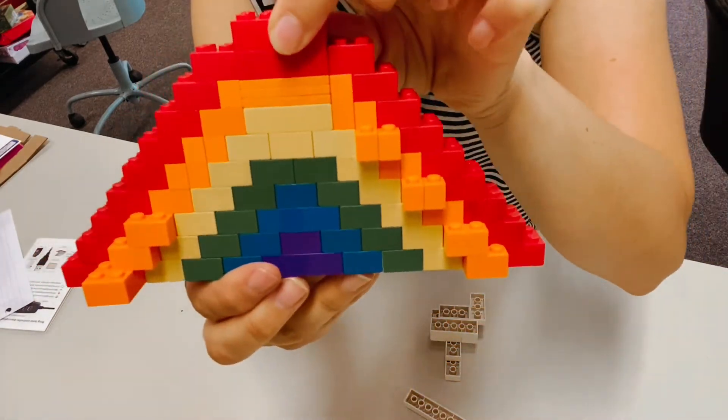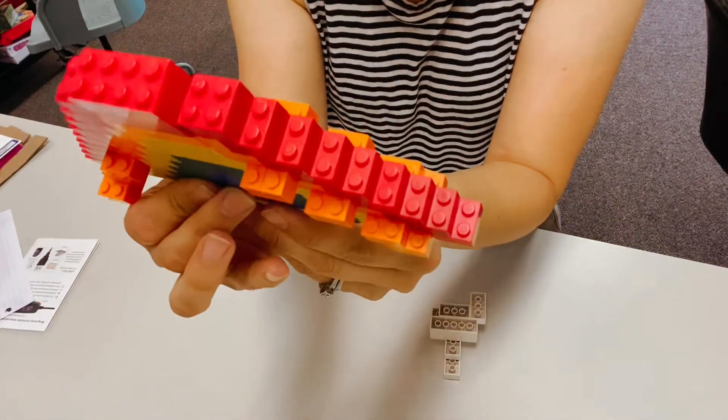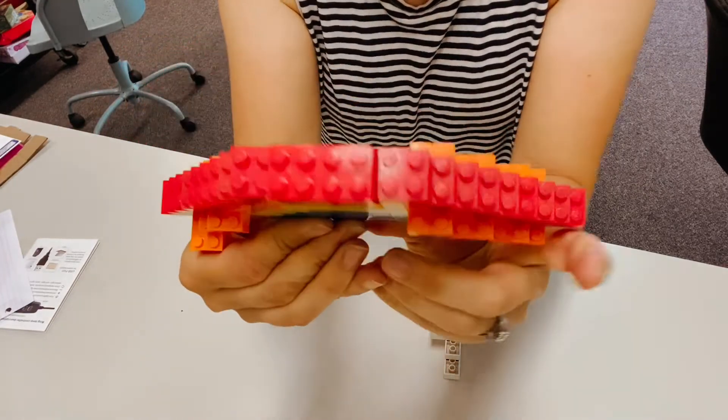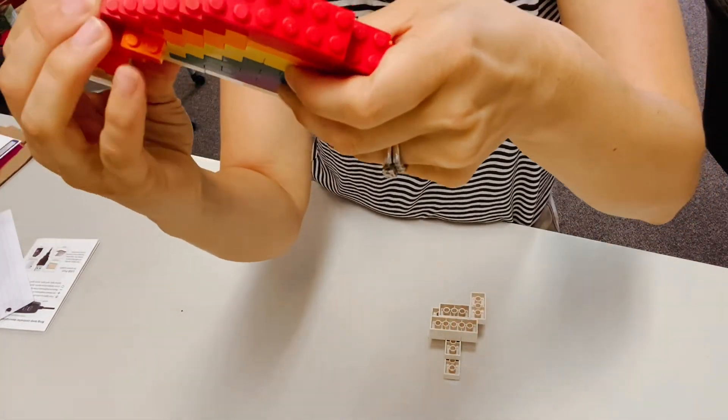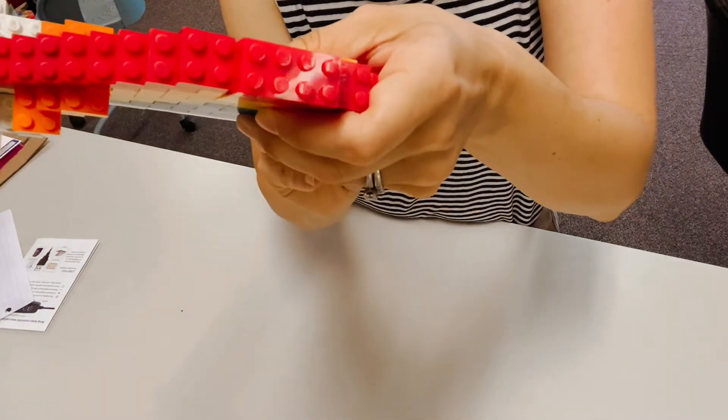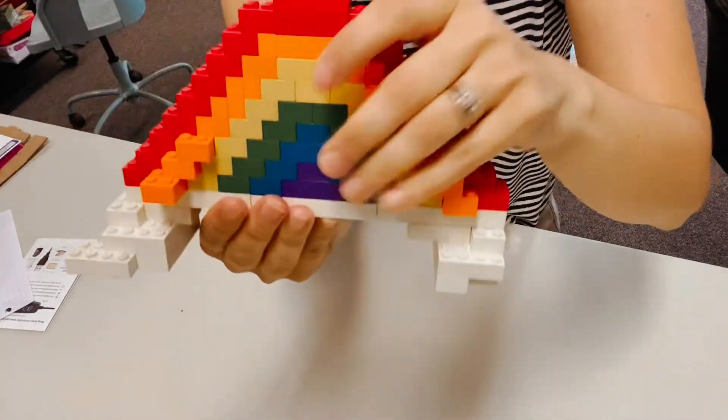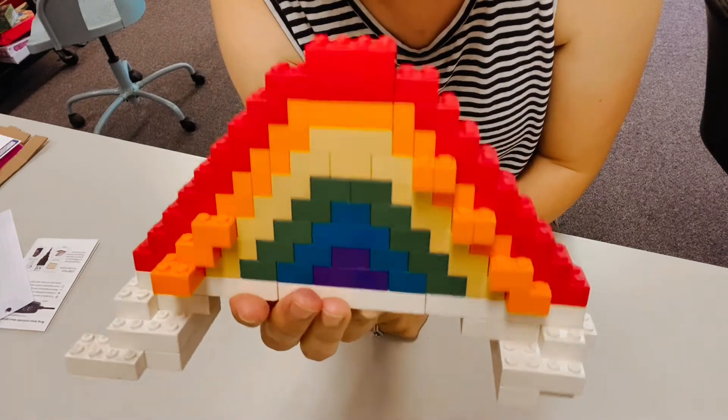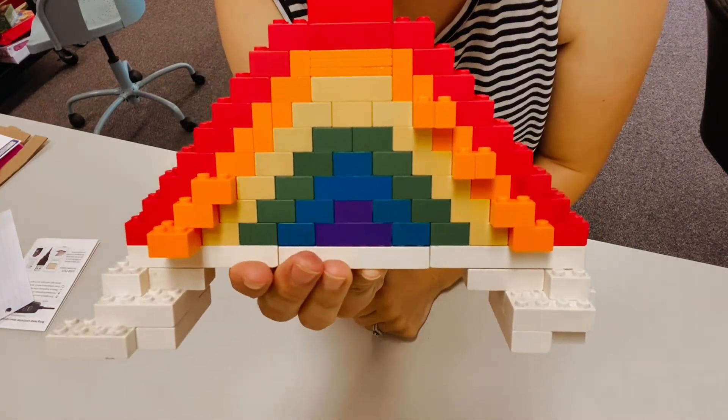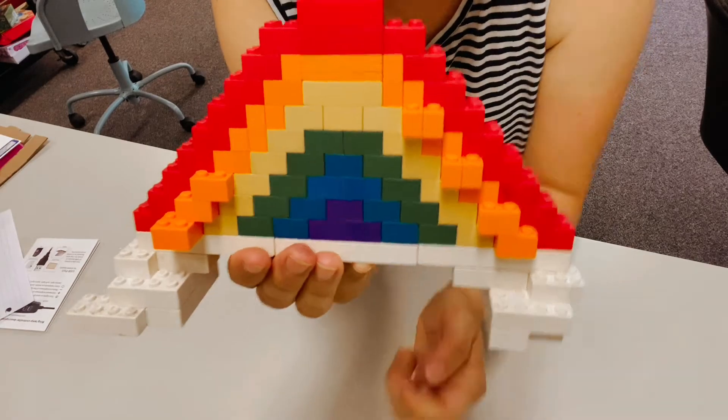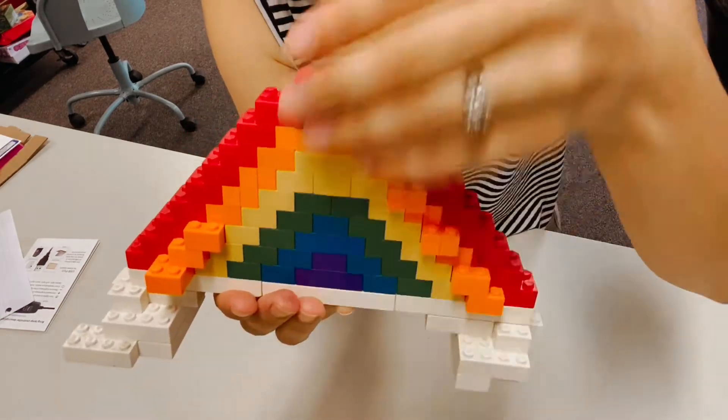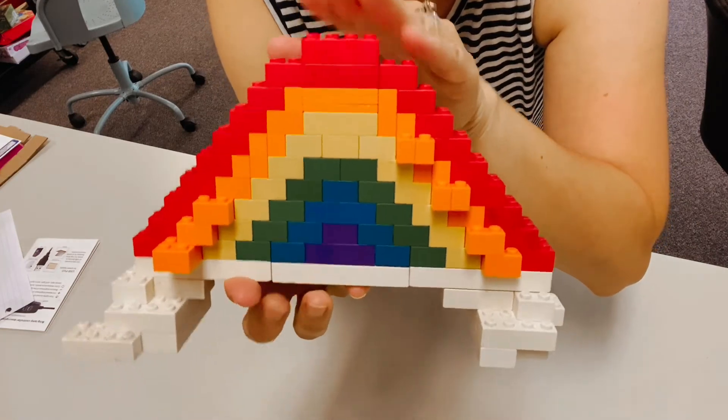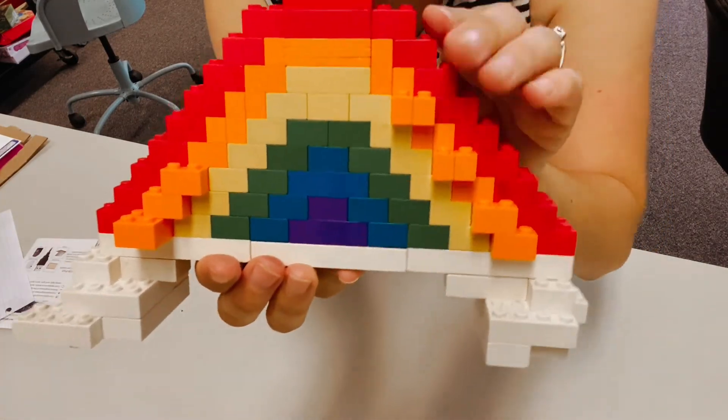And then when you're done, you can kind of put these back on, just like that, and you have a rainbow with some clouds. So send us your pictures - yours might look a little bit different than ours, but you want to make sure that they're these colors because that's what a rainbow would look like in this order. Send us your pictures, we'd love to see them.